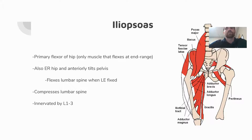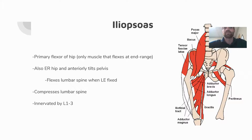When discussing muscles, we'll focus on general concepts rather than attachment points — refer back to your Kendall text for those details. What's more important is knowing muscle actions, clinical implications, and innervation, as those play a big role in examination. The iliopsoas is the primary flexor of the hip.